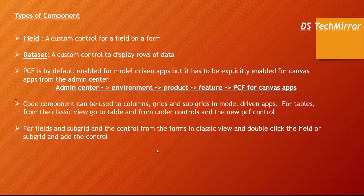Next are types of components — this is important. There are two types of components you can create inside PCF: field component and dataset component. A field component is a custom control for a field on a form. A dataset component is a custom control to display rows of data. For example, if you have a choice dropdown and want to customize it or give it specific behavior based on your business requirement, you create a field component — because you are fulfilling a requirement related to a field on a form.